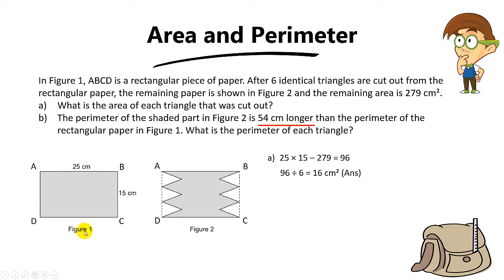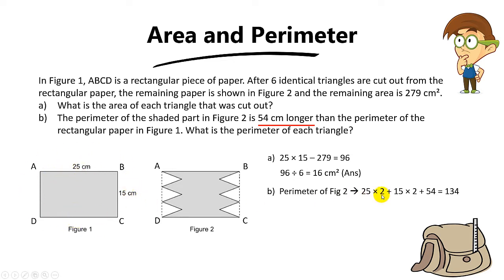Let me show this in a slow manner. The perimeter of figure 2 is basically the perimeter of figure 1 — which is 25 plus 25, then plus 15 times 2 (because it's 15 plus 15), then plus another 54cm. That's because the perimeter of figure 2 is 54cm more than the perimeter of figure 1. So the perimeter of figure 2 is 134.